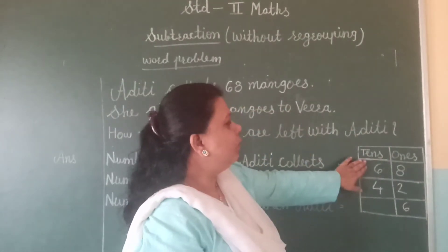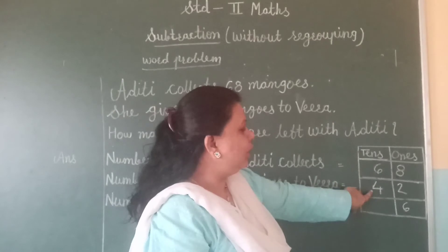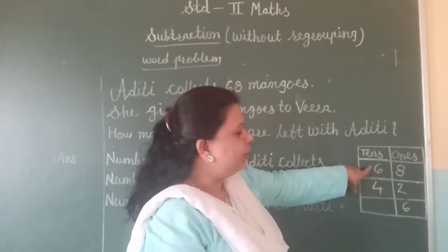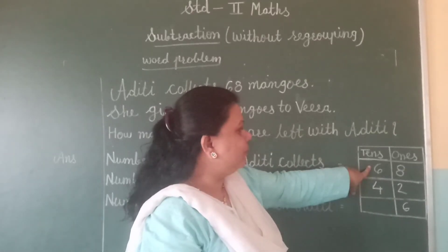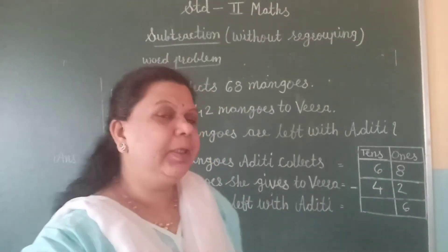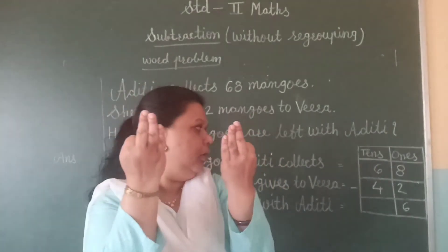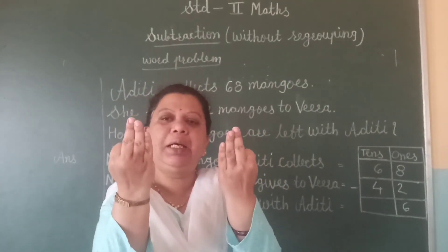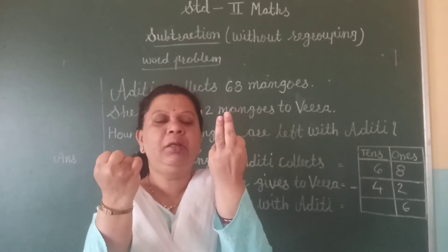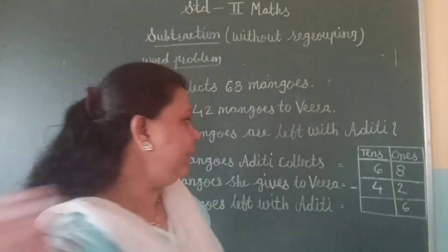Now, let us subtract the tens place. We are supposed to subtract the lower number from the upper number. Here, four is the lower number and six is the upper number. So, let us subtract four from six. For this, take your six fingers. Minus your four fingers — one, two, three, four. How many fingers are left over? Let us count — one, two. So, the answer is two.